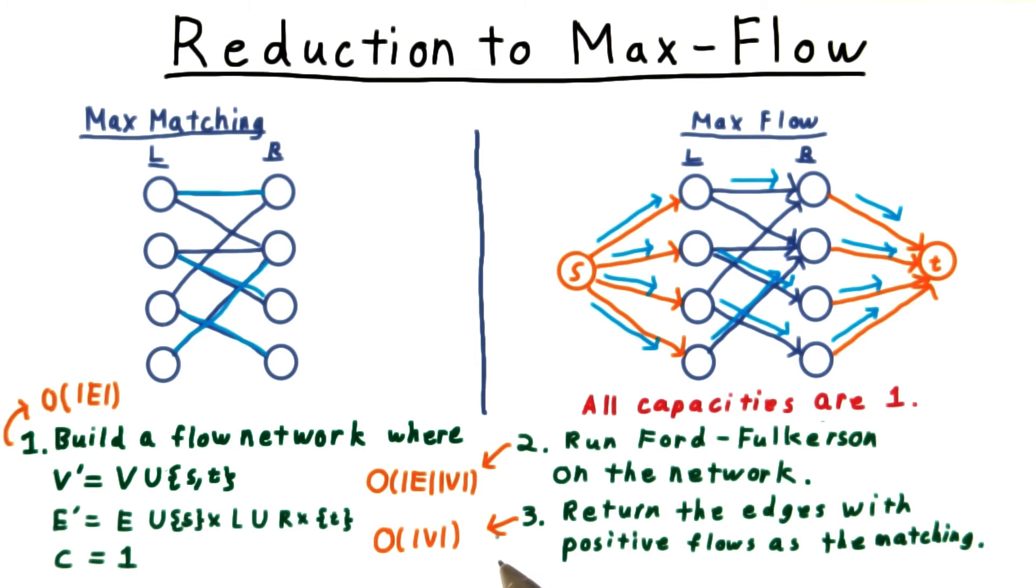The time analysis here is rather simple. Building the network is order E, or maybe order V, depending on the representation used. In any case, this is small compared to the cost of running Ford-Fulkerson, which is E times V. Note that V is a bound on the total capacity of the flow, and hence a bound on the total number of iterations.